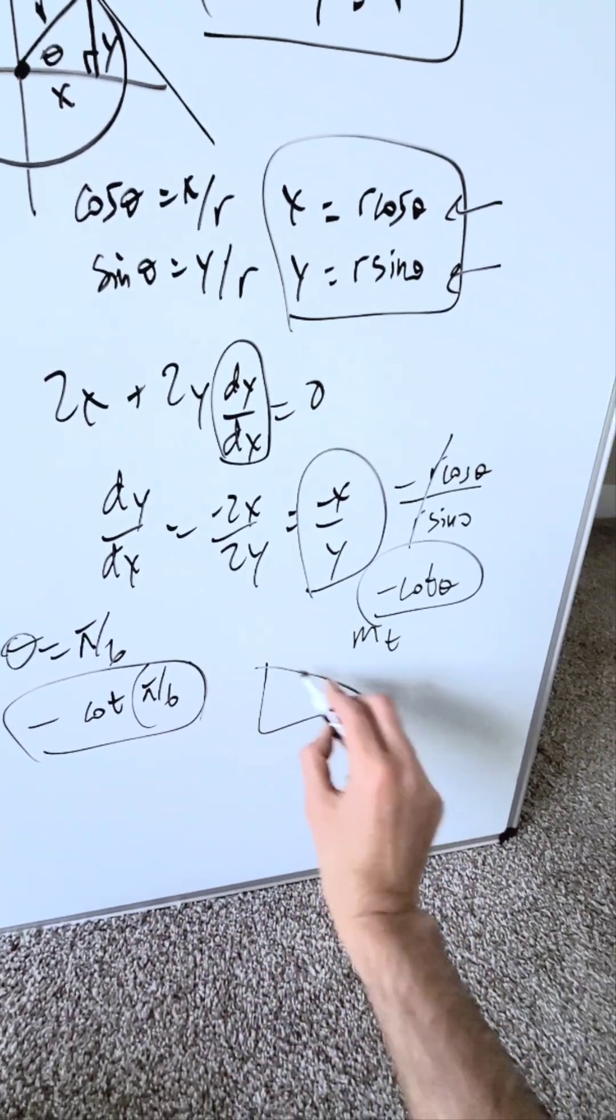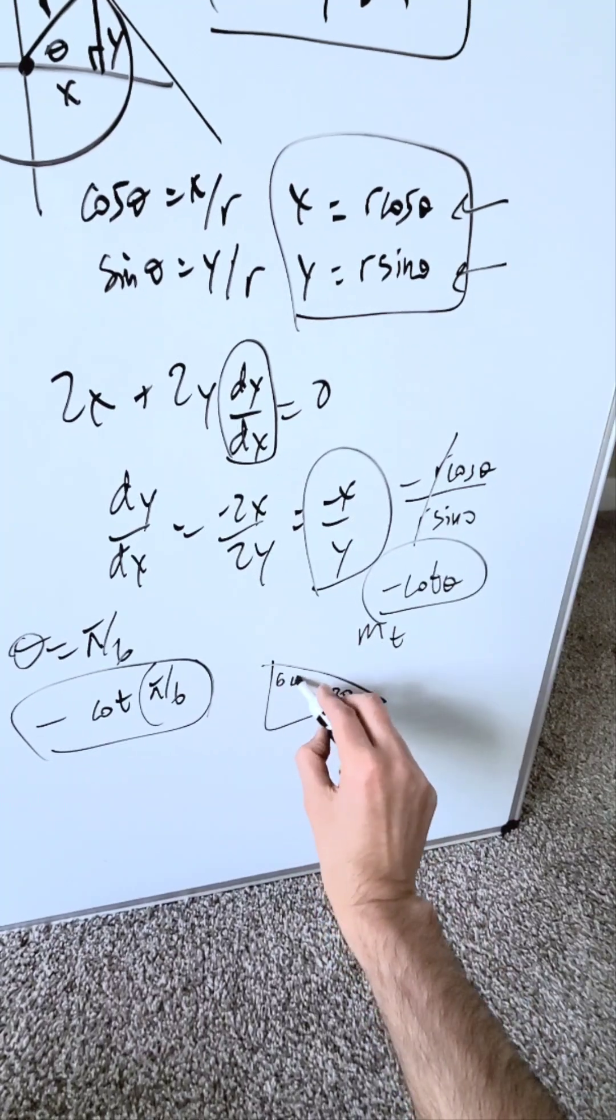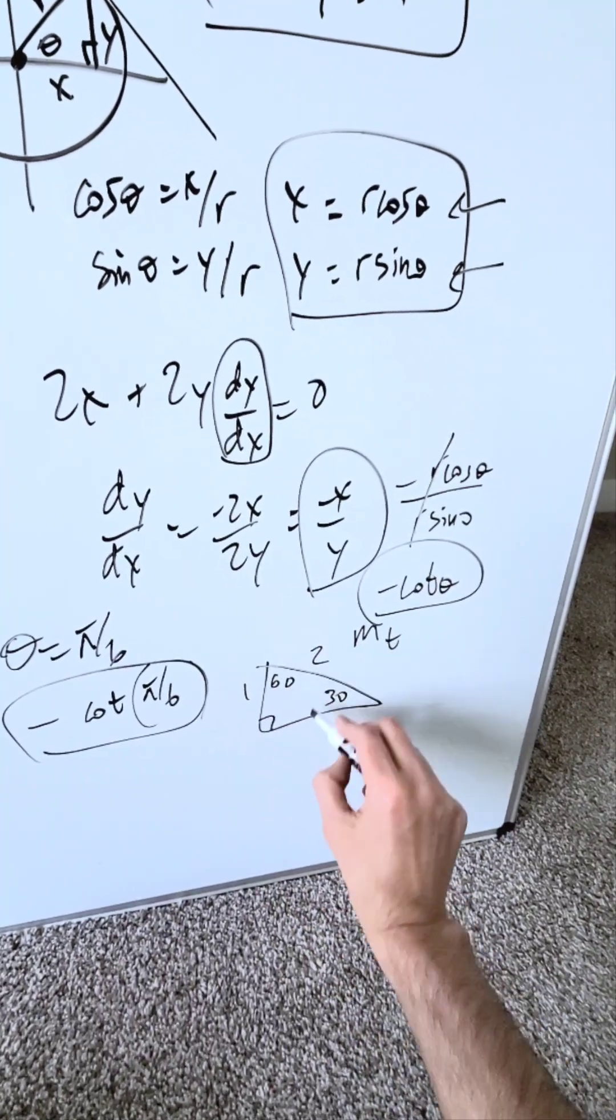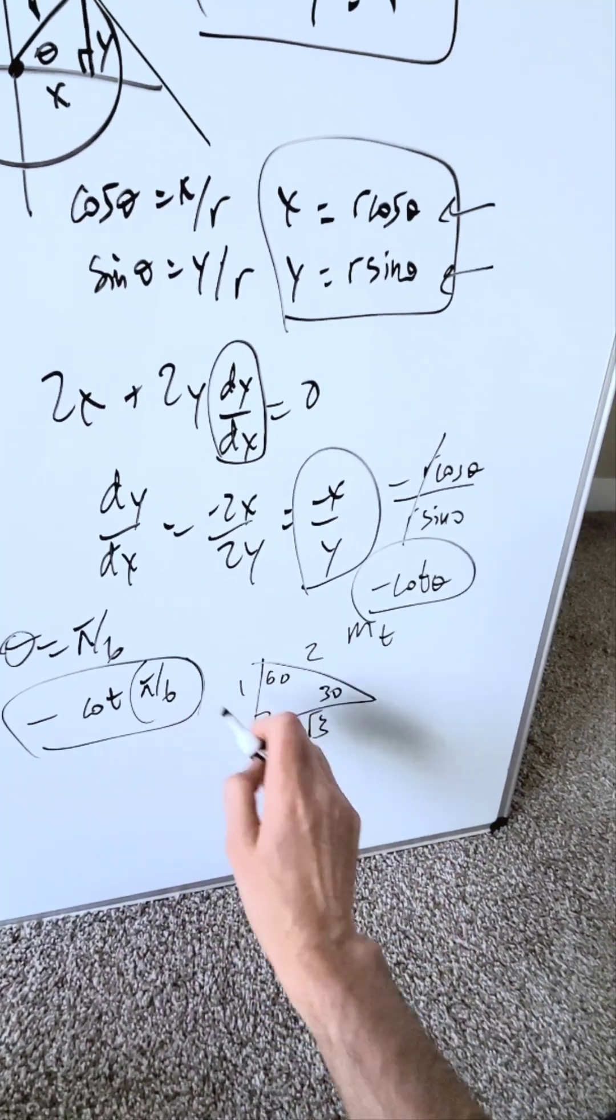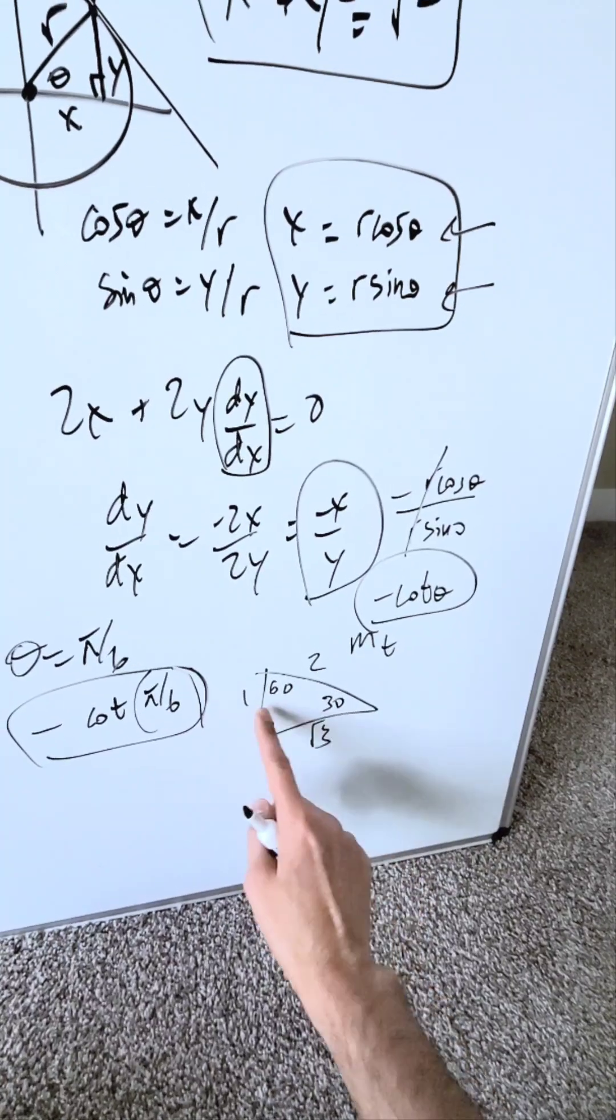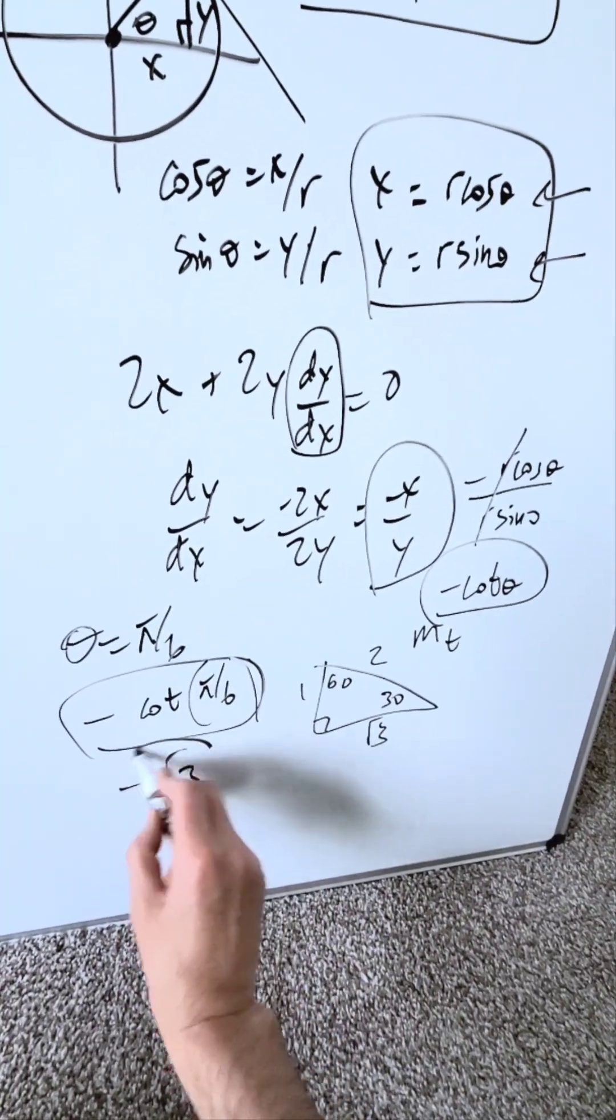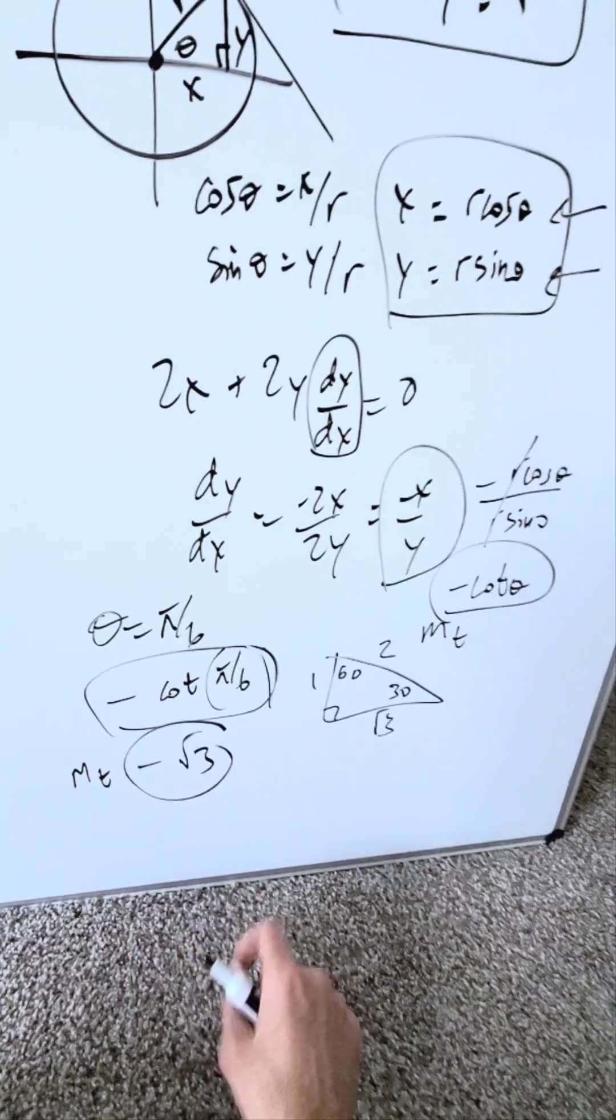Bring out your trigonometric ratios. Here's a 30. Here's 60 and 90. This is a 1, 2, root 3. What's cotan of 30? It's going to be adjacent over opposite. It will be a minus root 3. That would be the slope of your tangent line.